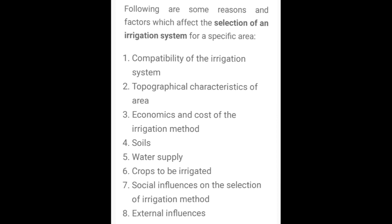Our irrigation system depends on some points. These points are: compatibility of irrigation system, topography, economics, soil, water supply, crop, social influences, and external influences.